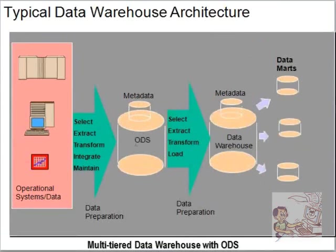The next slide shows the architecture with an ODS layer — an intermediate layer which is your ODS. Why do we use ODS? We use ODS basically for transactional reporting. You can do reporting from your data warehouse as well, but the data warehouse has values at a summarized level. To see actual transactional-level reporting, you use your ODS.